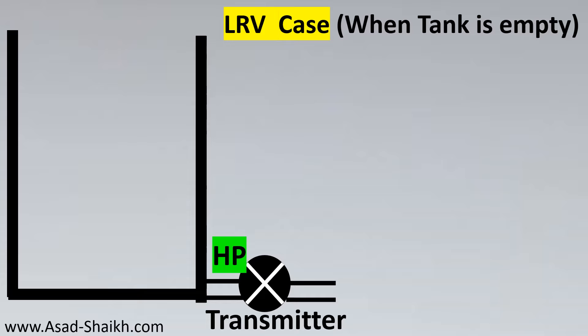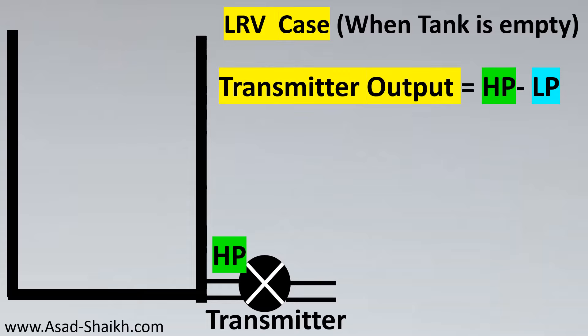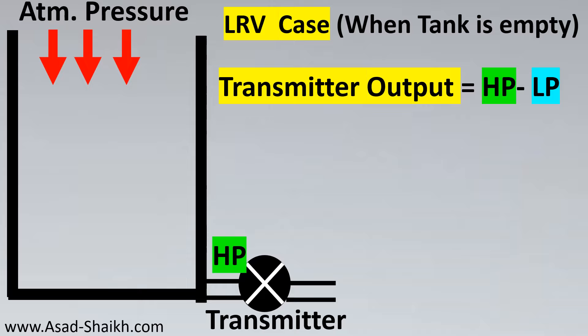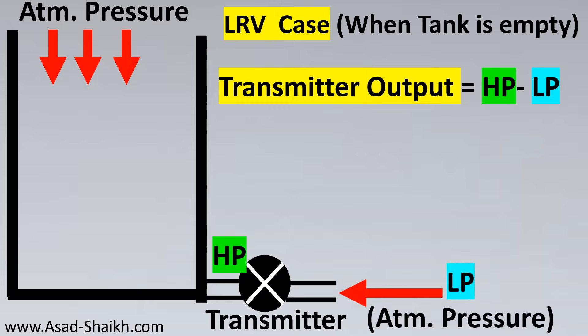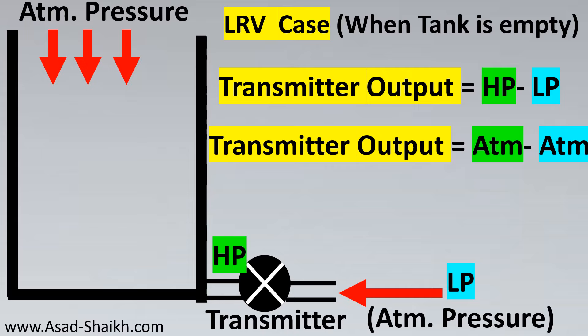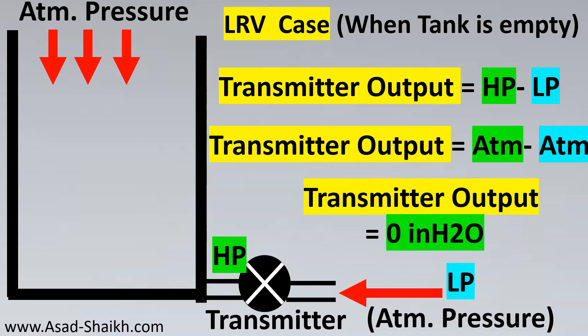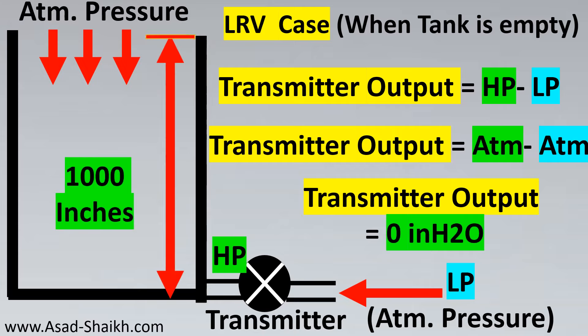Now let's look at the LRV case when the tank is empty. The transmitter output is HP minus LP. Since the tank is open to atmosphere, atmospheric pressure acts on the HP side, and the LP side is also open to atmosphere — so both sides only have atmospheric pressure acting. The transmitter output is therefore 0 inches of H2O. Even though the C-to-C distance is 1000 inches, there is no liquid in the tank, so no head is acting on the HP side.